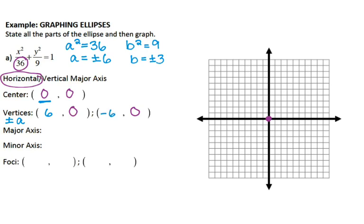I'll graph those two vertices at positive 6 and negative 6. The length of the major axis is the distance between those two blue points — 6 units in both directions, so the length of the major axis is 12 units. Another way to think of major axis length is 2 times A, so 2 times 6 gives us 12 units.